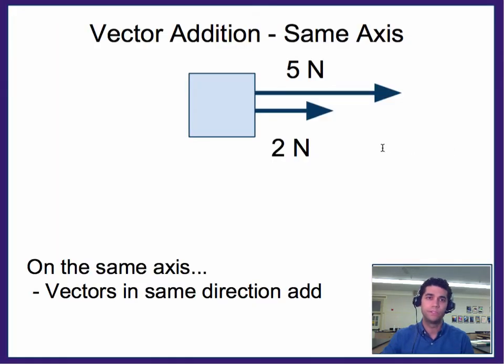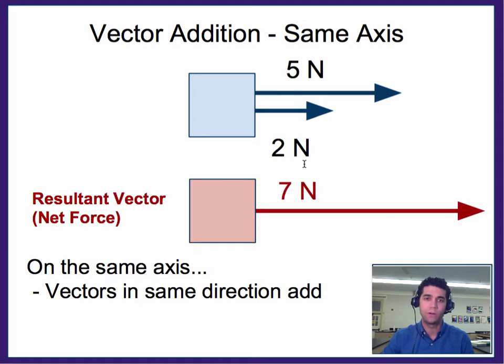Now a quick little review with vector addition. Remember that vectors on the same axis add together. So if we have five and two and they're both going in the same direction, then the net force in this case is seven newtons. That's the resultant vector.